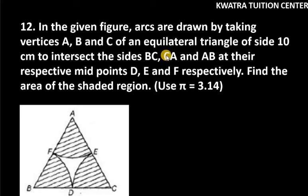Hello everyone, let's start with question number 12. It says in the given figure, arcs are drawn by taking vertices A, B, and C of an equilateral triangle. This is given that the triangle is equilateral of side 10 centimeters.